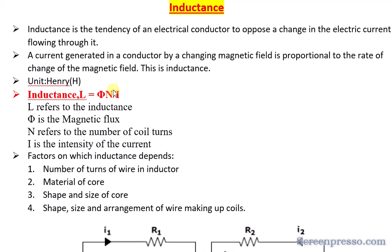Inductance is calculated using the formula L = Nφ / i, where L refers to inductance, φ (phi) is the magnetic flux — which was covered in previous sessions — N is the number of turns in the coil, and i is the intensity of the current. On this basis, inductance is calculated.